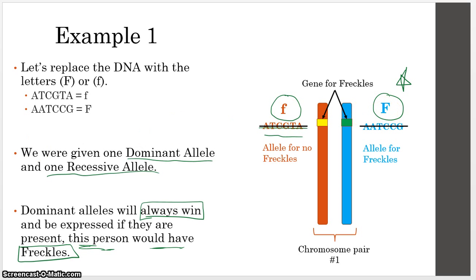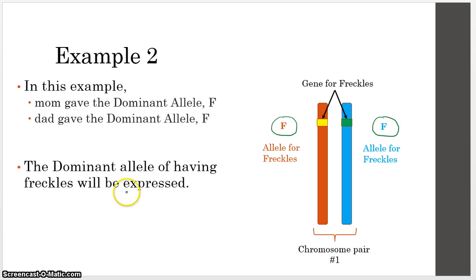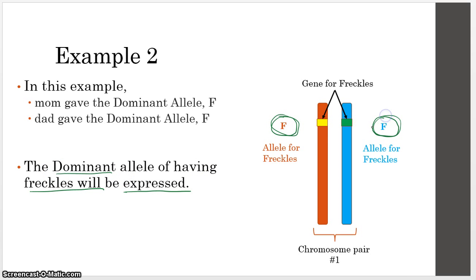In example two, let's say mom gave you the dominant allele and dad also gave you the dominant allele for freckles. This example is easy — you have to have the dominant trait, which is freckles. This person will have freckles because all they have is the allele for the dominant trait.